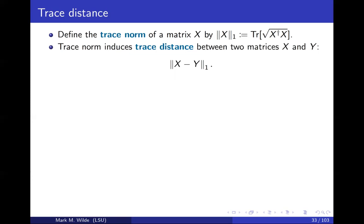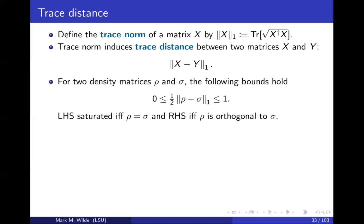The trace norm induces the trace distance between two matrices. And then this is the measure that we'll use for distinguishability of quantum states or to measure error or difference between quantum states. So one thing you can prove is that if you take the trace distance between two density matrices, and you add a factor of a half in front, the result is you'll always get a number that's between zero and one. And so this normalized trace distance you can think of as like an error between an ideal state and a noisy version of that ideal state.